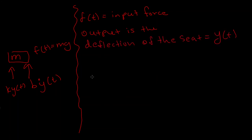Now the input here is the force F(t). Output is the deflection of the seat Y(t). If we take F equals ma, downward being positive, then we can form an equation that governs this system.